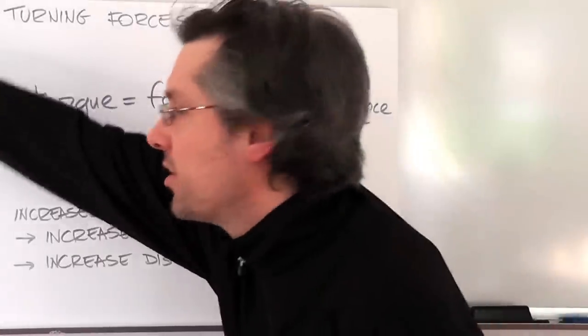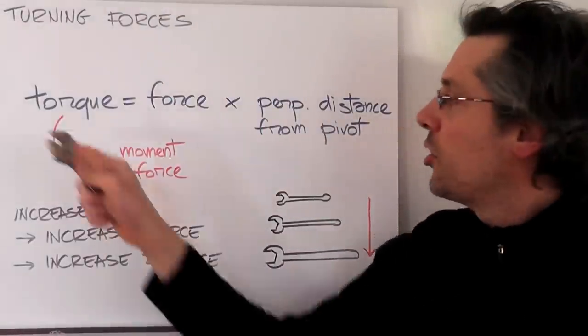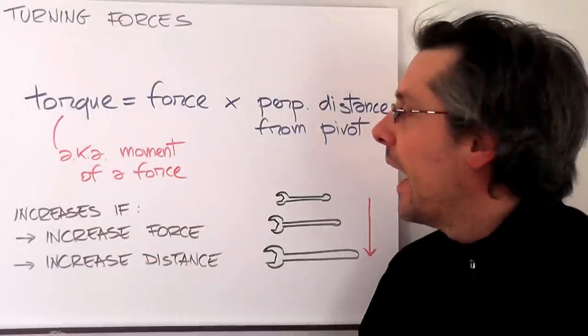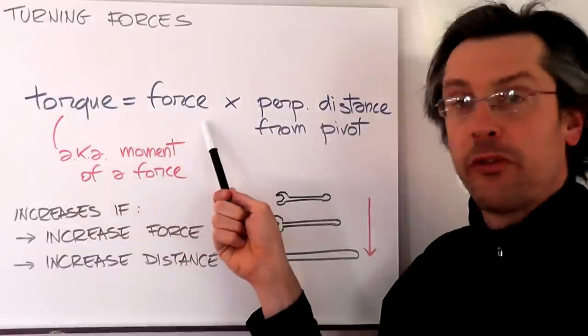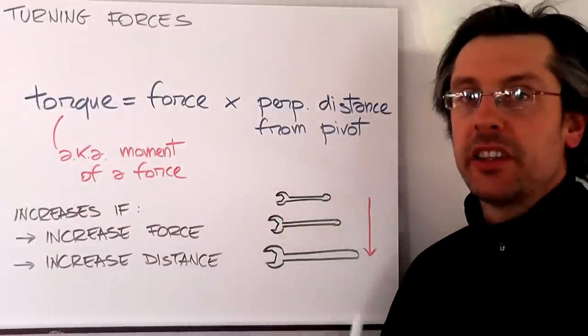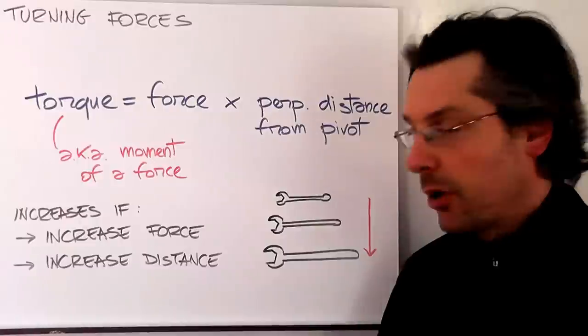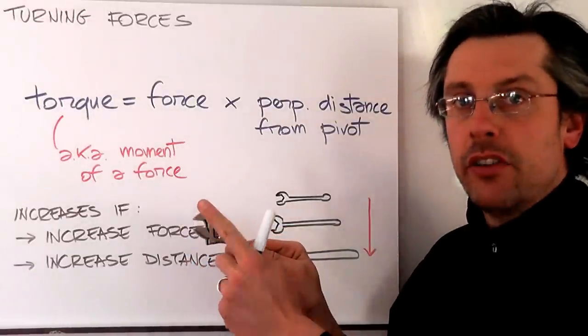For this reason we introduce a new quantity which is called the torque, also known as the moment of a force. A torque is defined by a product between the force that you apply and the perpendicular distance from the pivot. The pivot is what we call the turning point. In the case of a wrench, it's where the nut is.